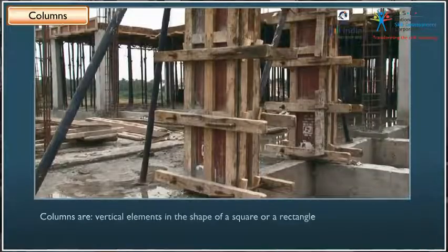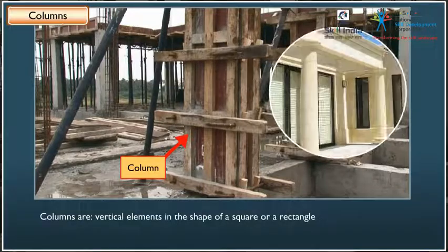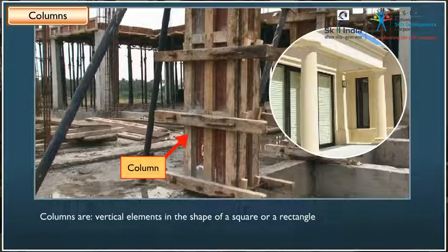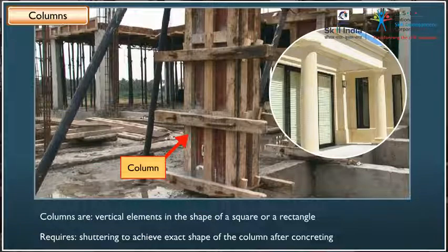Columns. They are vertical elements just above the foundation and are mostly in shapes of a square or a rectangle. Columns are sometimes made to look round to give them a better look. Shuttering is required for the vertical surfaces to achieve the exact shape of the column after concreting.